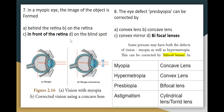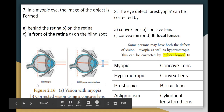Myopia — in a myopic eye, the image forms in front of the retina instead of on the retina. You have to correct it. The image forms in front of the retina. The answer is Option C.